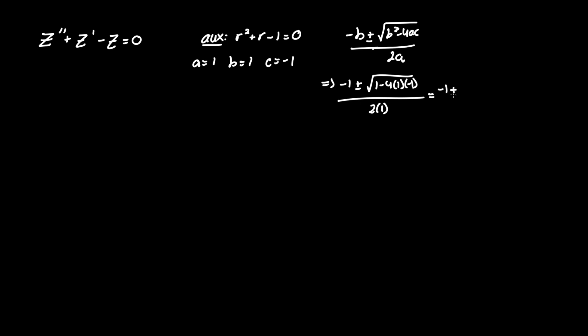Simplifying we have negative one plus minus square root of one minus four times one times negative one, so that's plus four. So one plus four is just positive five over two.